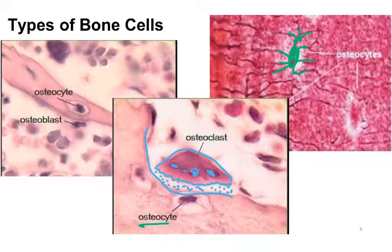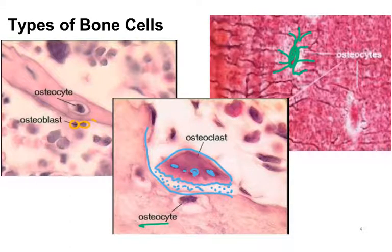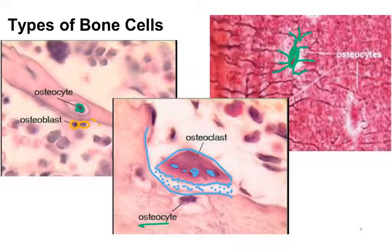Finally, on the left we have osteoblasts. They tend to occur in groups along the surface of bone that is being mineralized or built. The osteocyte in the middle here was once an osteoblast, but it has essentially walled itself in by secreting collagen that's becoming mineralized.